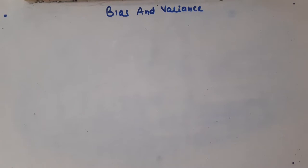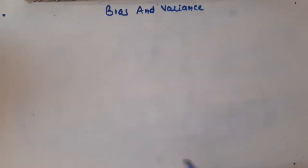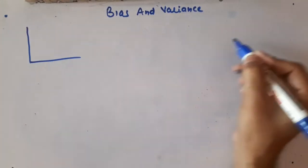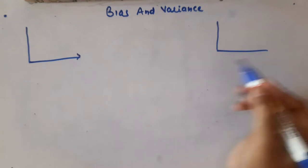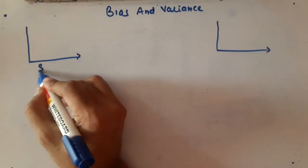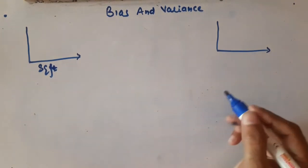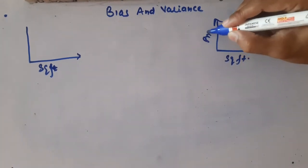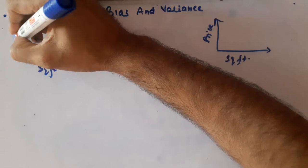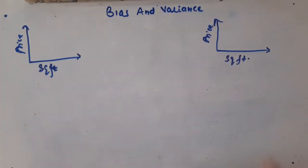Hi everyone, welcome to my YouTube channel. My name is Mandeep and in today's video we are going to discuss bias and variance. We are going to do this video on a whiteboard and understand how these two concepts work using an example. Assume we have two data scientists given some data about house buying property, with one independent variable — area in square feet — and the target variable is the price of the property.